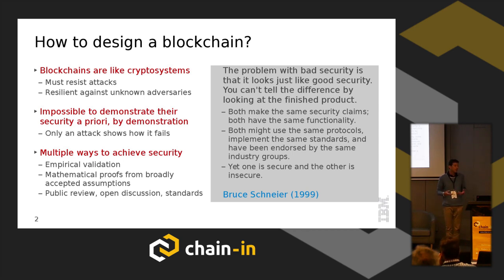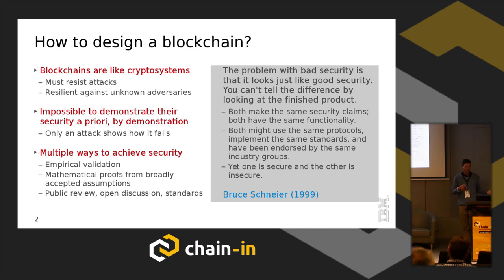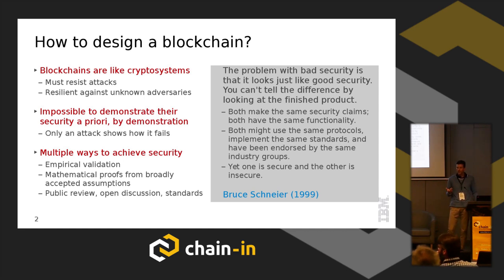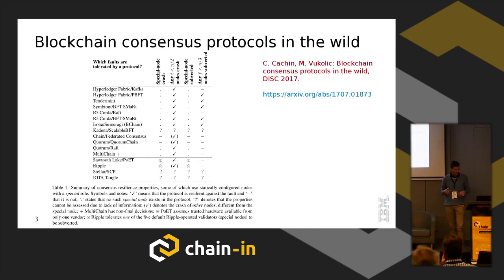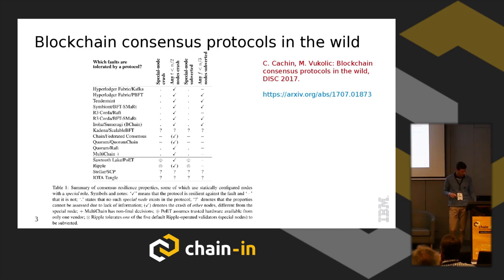You have to expose the system to the real world and face attackers, or come with security proofs and assumptions. But whenever you make an assumption, that's a vulnerability somebody can circumvent. As Schneier's blog post in the 90s said: the problem with bad security is that it looks just like good security — you can only tell the difference by looking inside and by expert agreement. That's the mission with which I wanted to open, to say why in the Hyperledger Fabric platform we don't have a fancy consensus algorithm — we took things that are very well known.